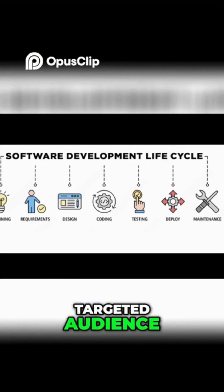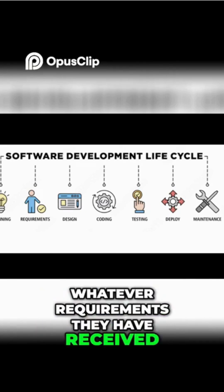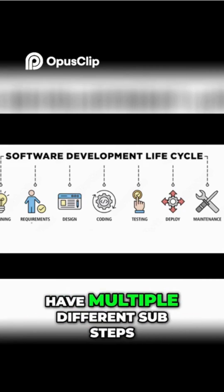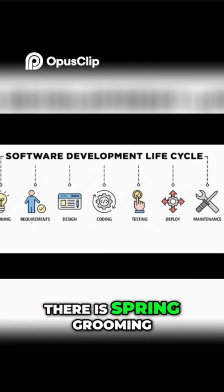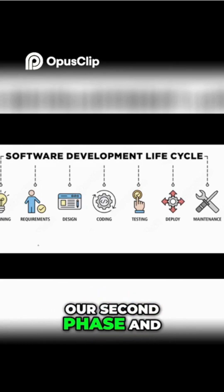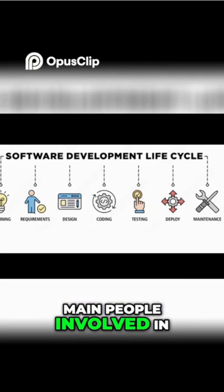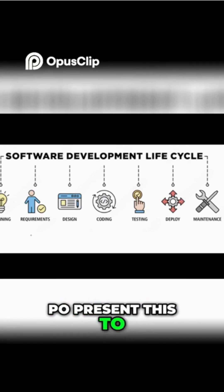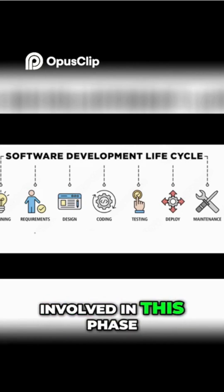Next comes the requirement phase. Based on the planning phase, whatever requirements have been received are presented to the whole team. This phase also has multiple sub-steps — for example, in Agile there is sprint planning and sprint grooming, which we will cover in upcoming videos. In this phase, the BA, PM, or PO presents to the whole team including developers, designers, and testers, who all work together to understand what needs to be built and how.